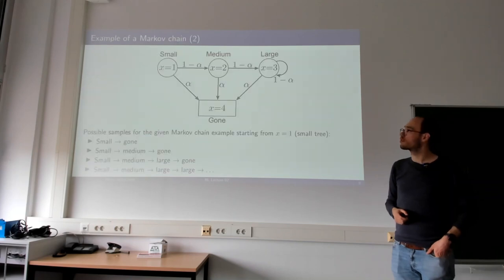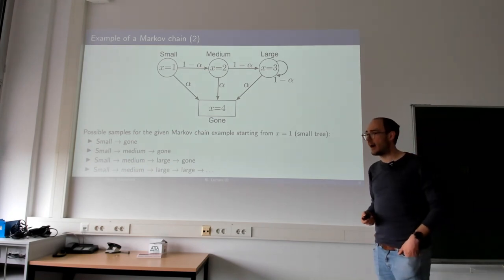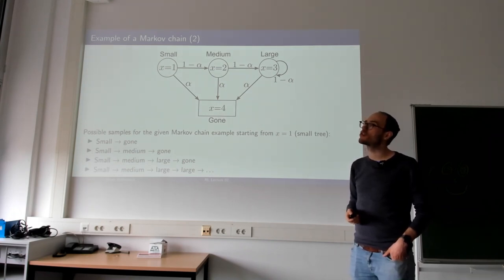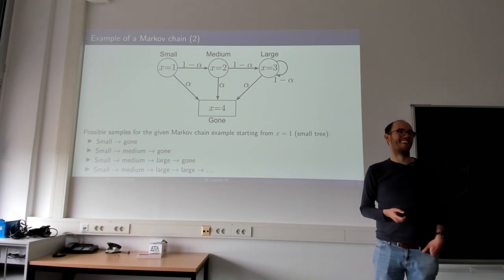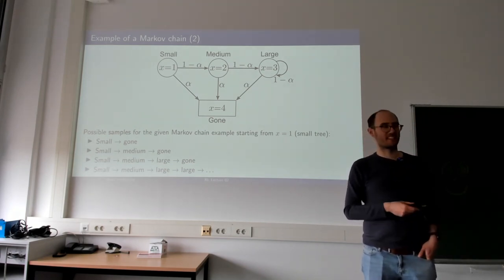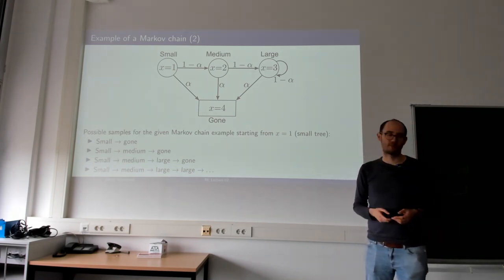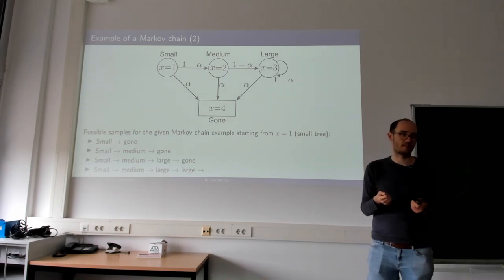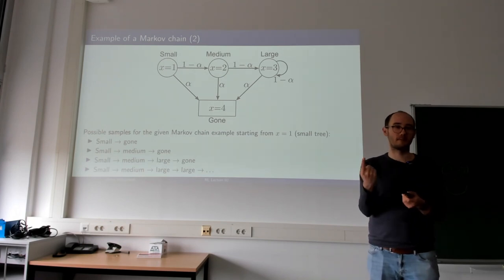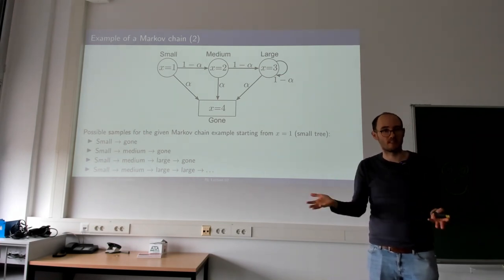Multiple terminal states are definitely possible. For example, in a game where a hero can fall into traps and die, there could be two, three, or four traps, each representing a separate terminal state where game over occurs.